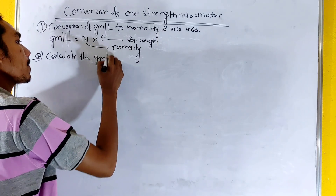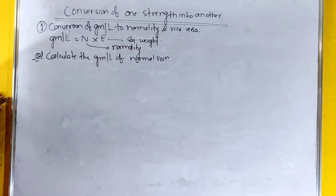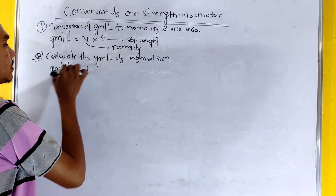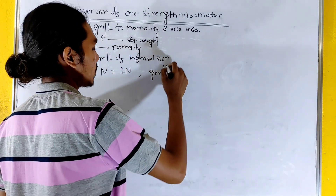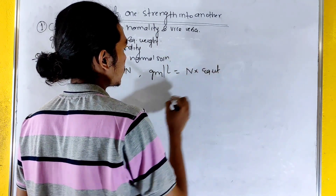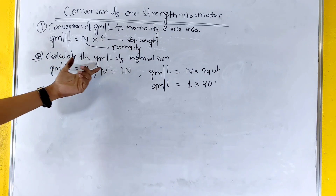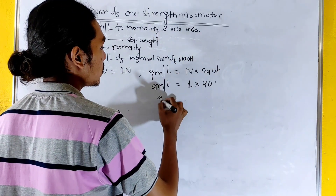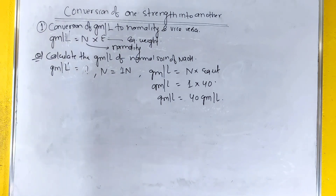Gram per liter of a normal solution — 1N solution. The formula is: gram per liter equals normality into equivalent weight. So gram per liter equals 1 into 40, which gives 40 gram per liter. This is the basic conversion for a 1N solution of NaOH.